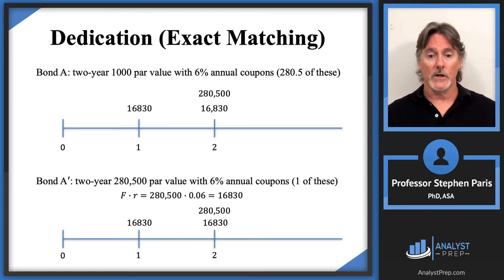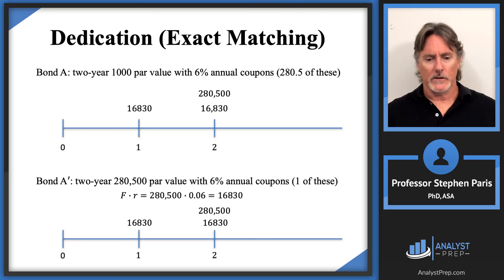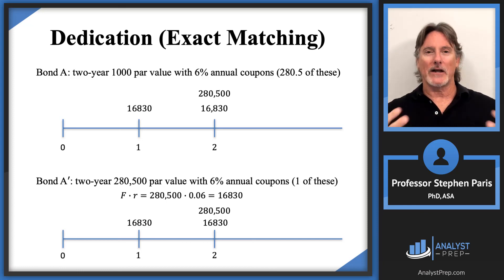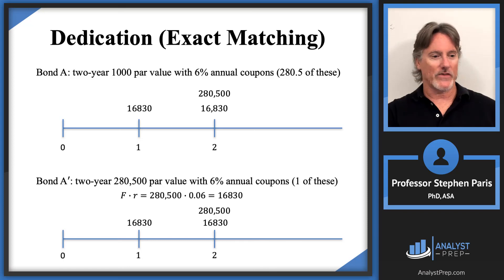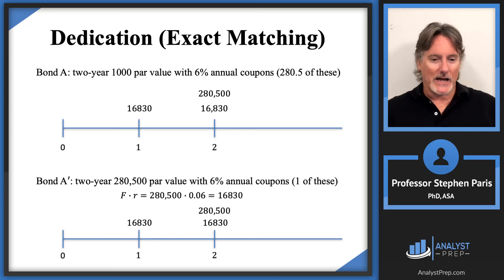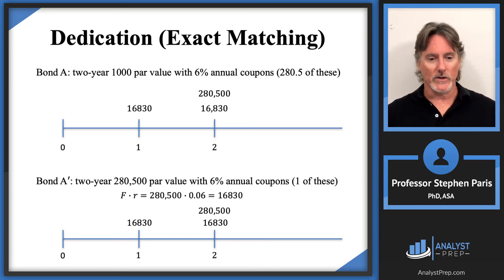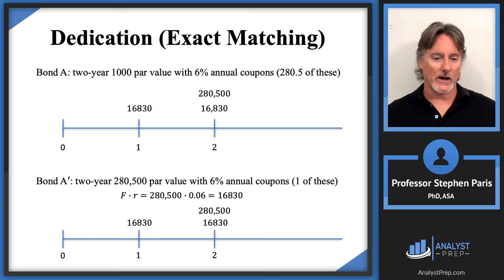Generally you can't choose the face amount of a bond in practice, but theoretically, if the face amount is $1,000 and you want $280,500, you simply buy 280.5 of those $1,000 face value bonds and treat them as a single bond with face value $280,500. I hope that clarifies how that technique will be applied in future videos.